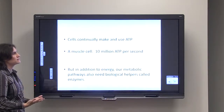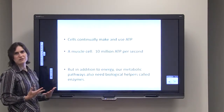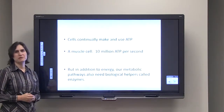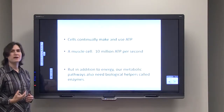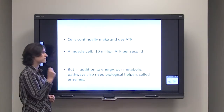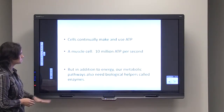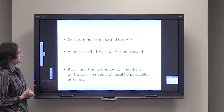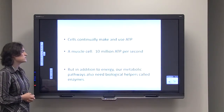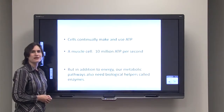Now cells continually make and use up ATP. In a muscle cell that's actively working, it can make and use up 10 million ATP molecules every single second. But in addition to ATP, our metabolic pathways also need biological helpers called enzymes, and we'll talk about that another time.